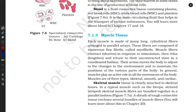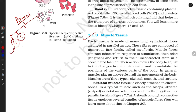Welcome to my channel Adhyan with Flow. Let's start with our next animal tissue - muscle tissue. In our previous video we started animal tissue, which is divided into four parts: epithelial tissue, connective tissue, muscle tissue, and in our next video we will talk about neural tissues.